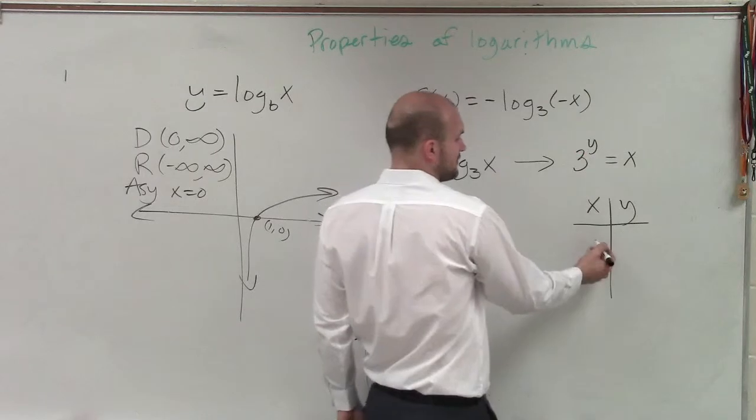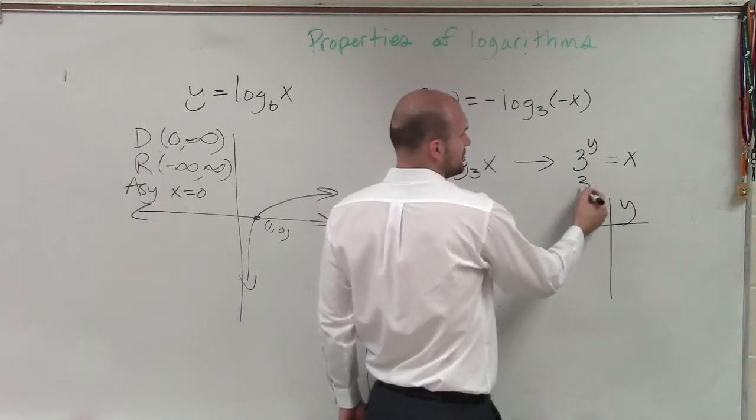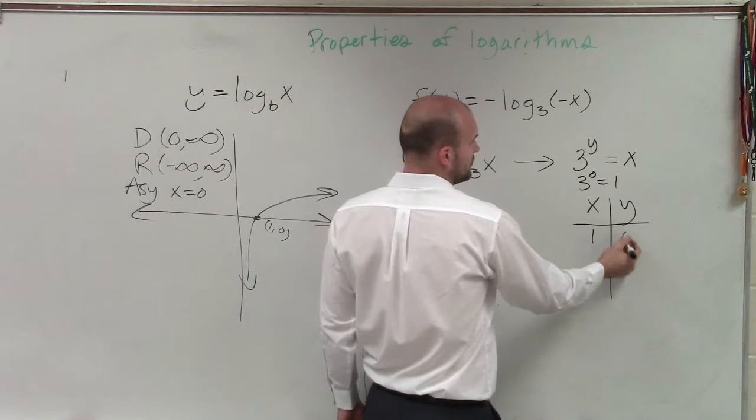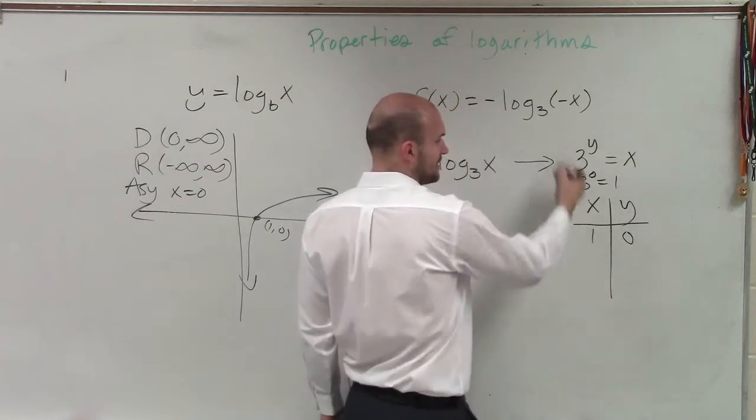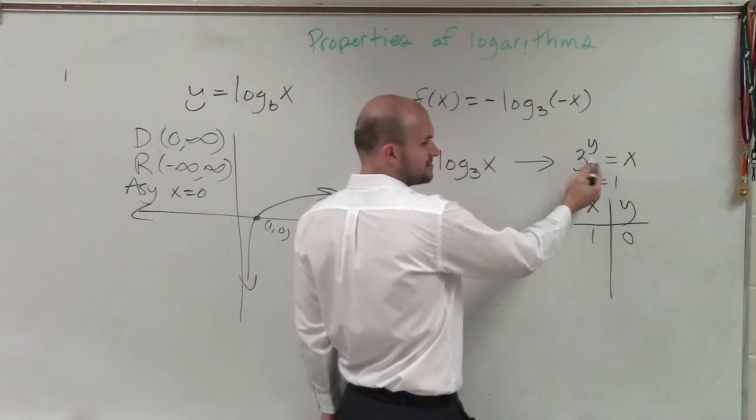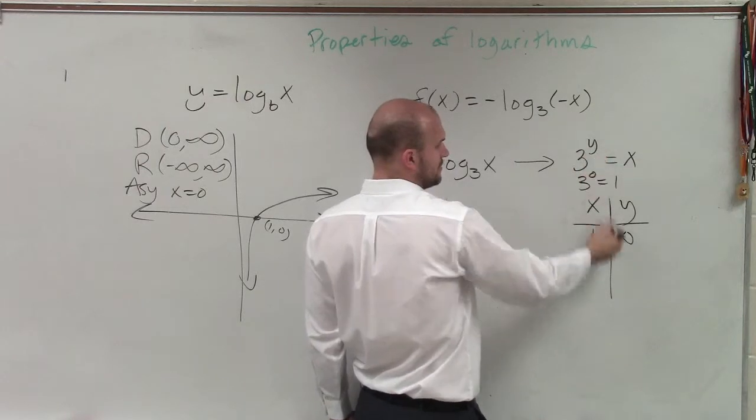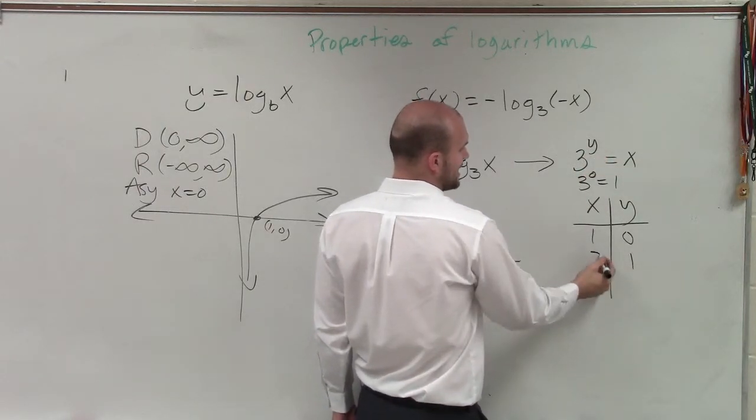So if I put 0 in there, that's 3 to the 0, which equals 1. So x equals 1 when y equals 0. And then I can also do, what about when y equals 1? When y equals 1, x equals 3.